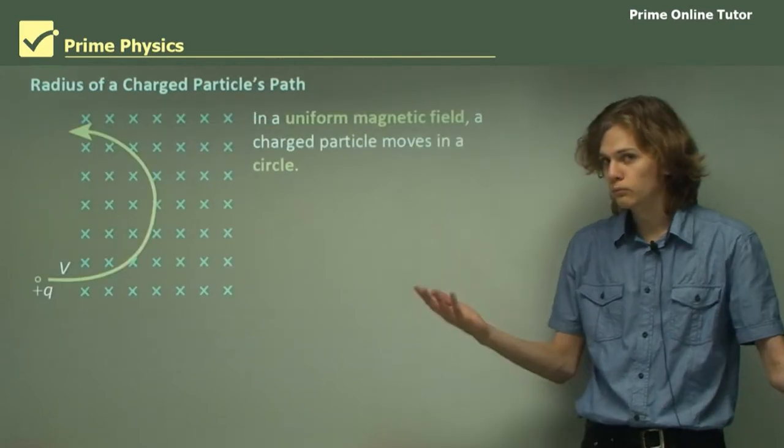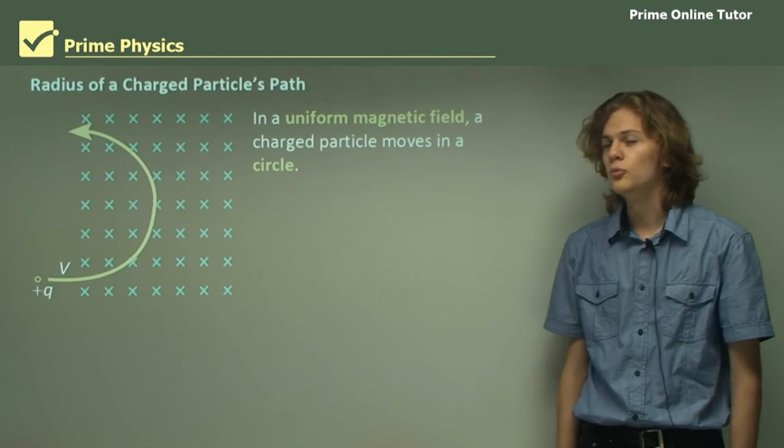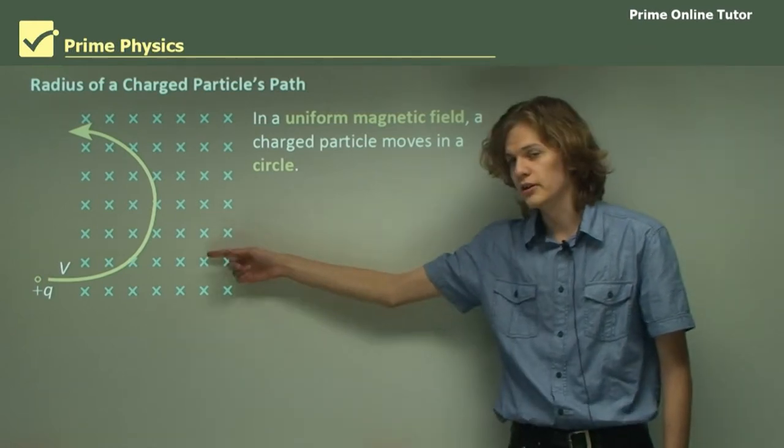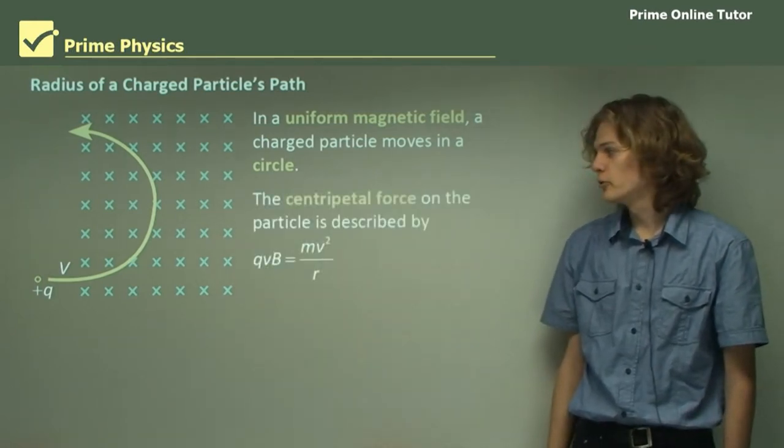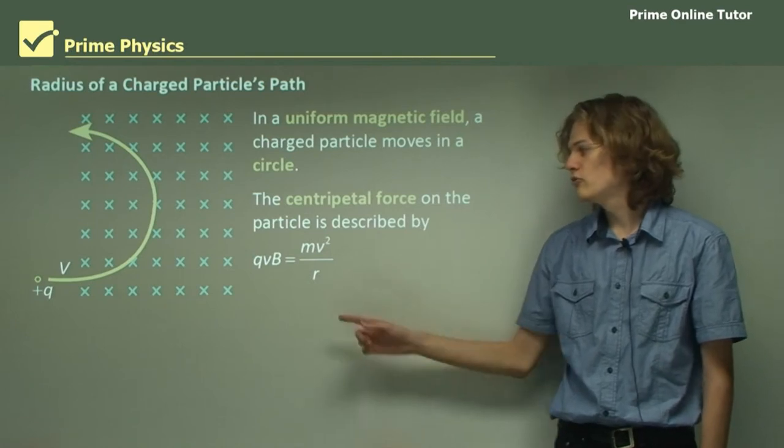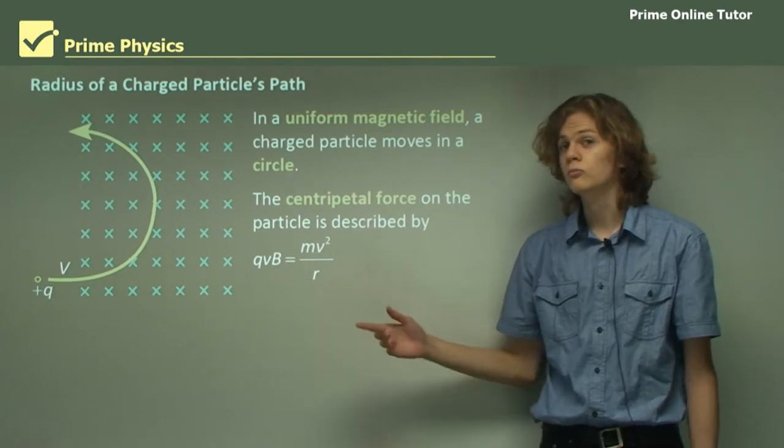A charged particle in a uniform magnetic field moves in a circle, as we can see over here. The centripetal force in the particle is given by qVb equals mv squared on r, which I'm sure you remember.